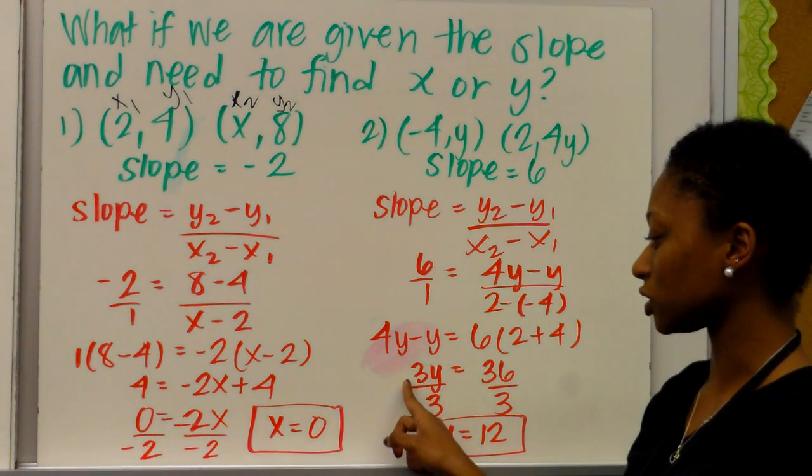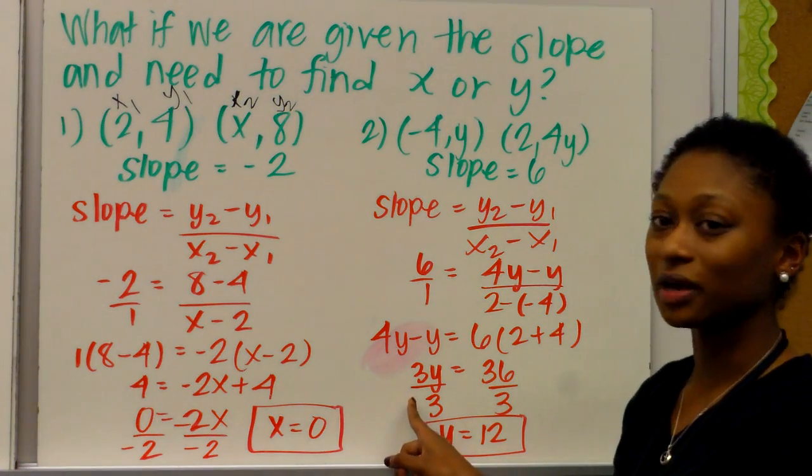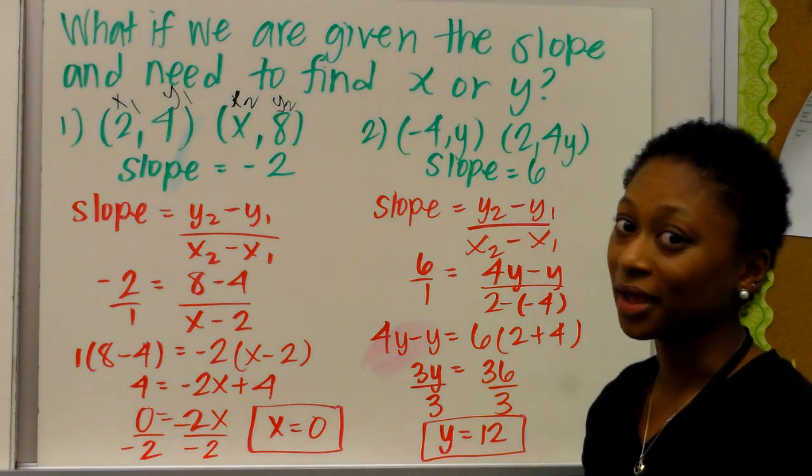And then 4y minus y is just 3y, so we're left with 3y equals 36. To get y by itself, we need to divide both sides by 3. So 36 divided by 3, y equals 12.